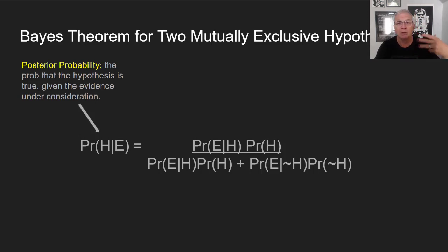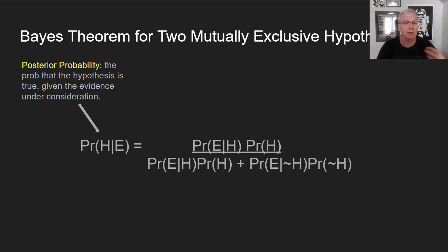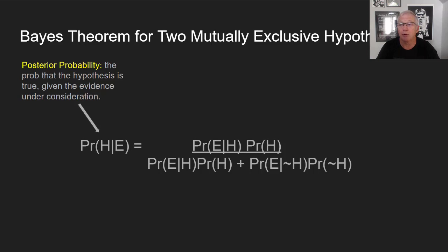These parts of the theorem have names. The answer, or the left-hand side of the equation — the thing we're trying to determine — is called the posterior probability. It's called posterior because it means: what is your credence or belief in the hypothesis after, or posterior to, having made an observation? Once we've folded the observation in, to what extent do we believe the hypothesis? The posterior is the answer we get from Bayes' theorem problems.